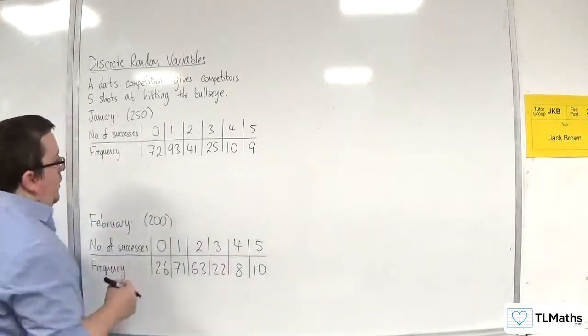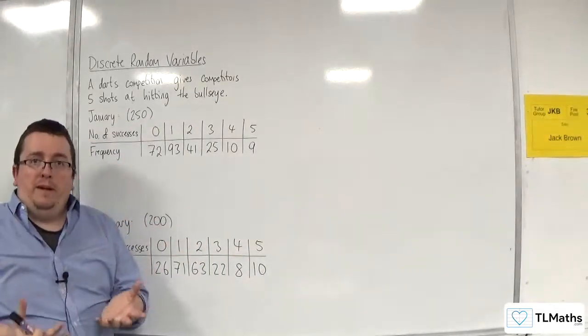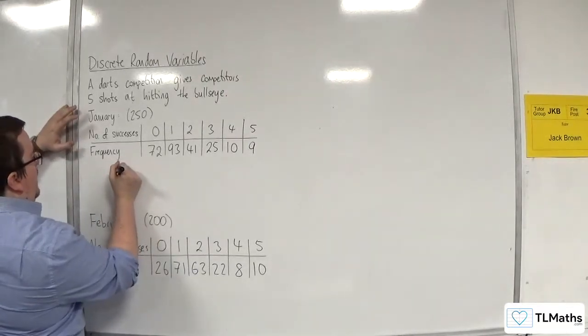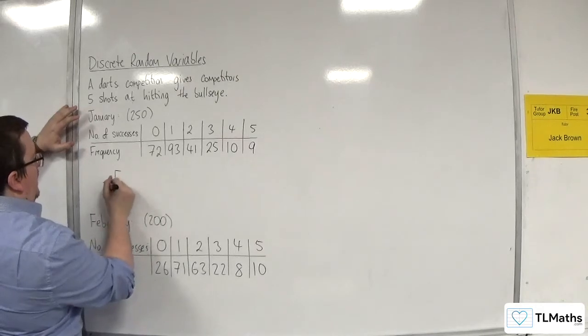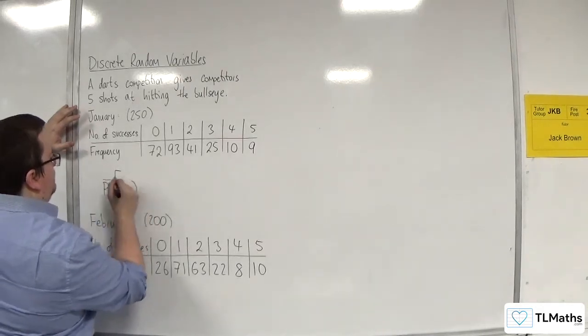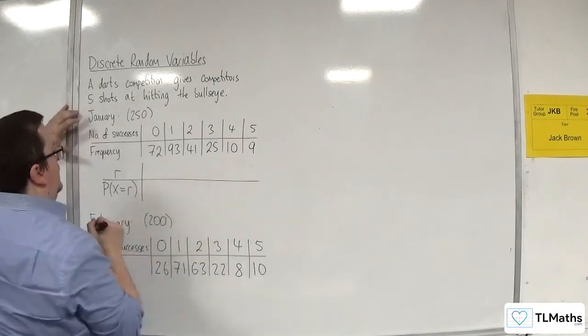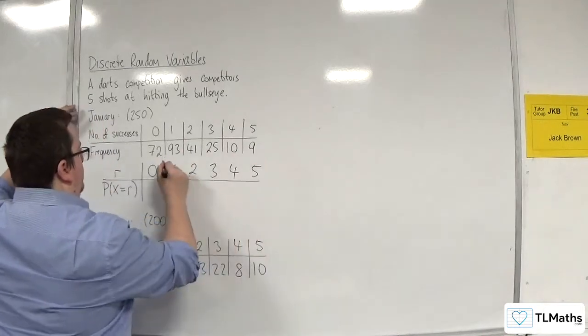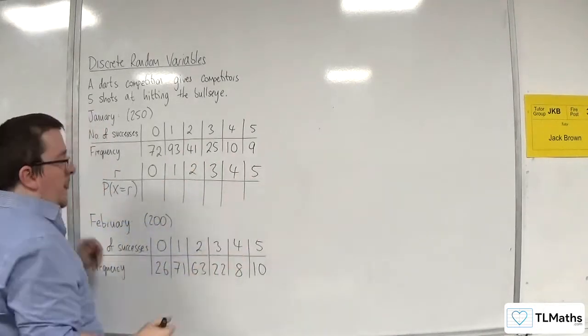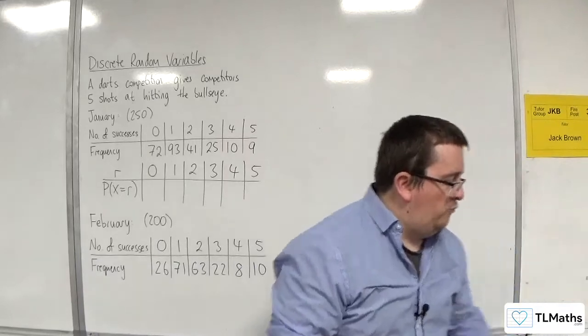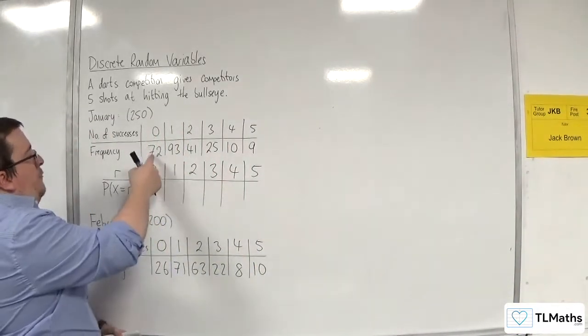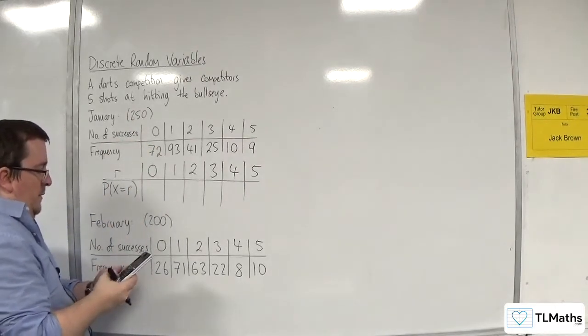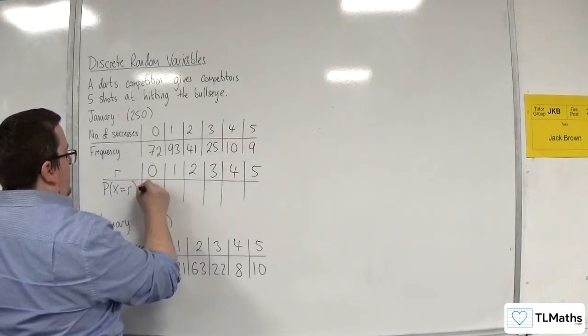We are going to build a probability distribution for January and February. Let's have R and the probability of X being equal to R. We're going to have 0, 1, 2, 3, 4, and 5. To work out the relative frequency, I get the frequency here, 72, and divide it by 250. So we get 0.288 there.